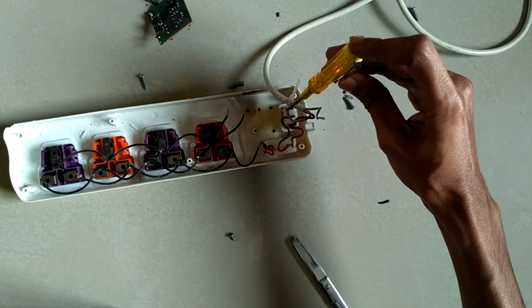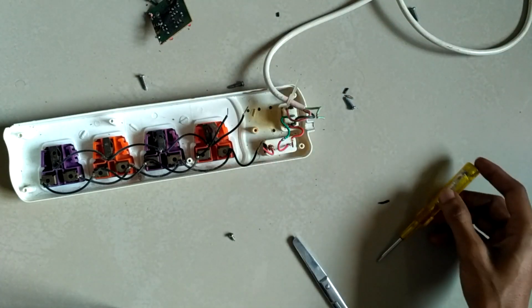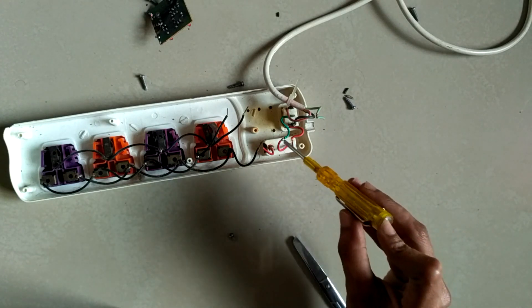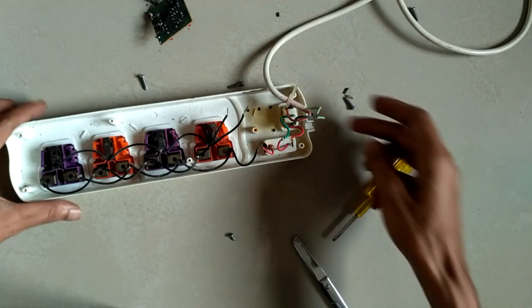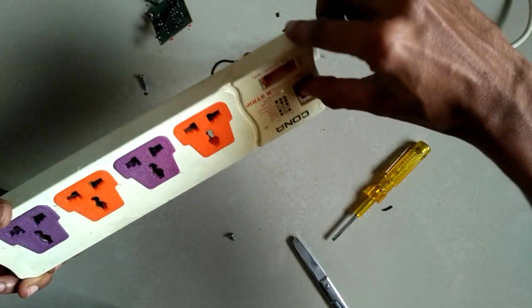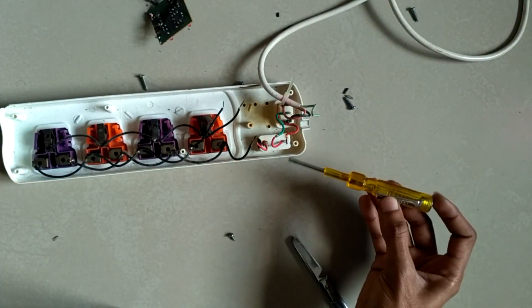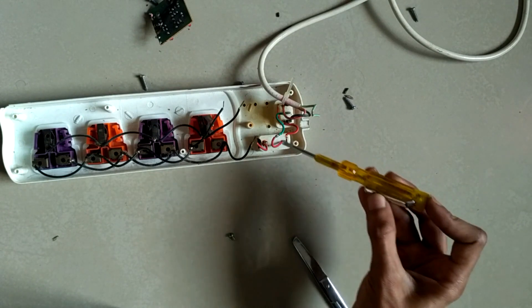This is earth. And at the top, that is power line. That is also power line. It's in switched off condition. Now switch it on and test again if the switch works perfectly or not. Yes, the switch works perfectly.